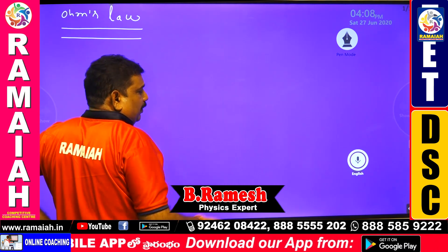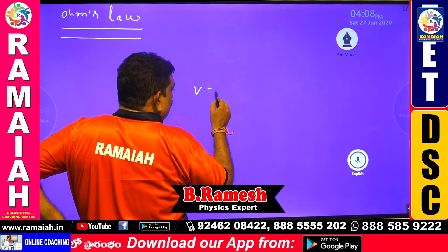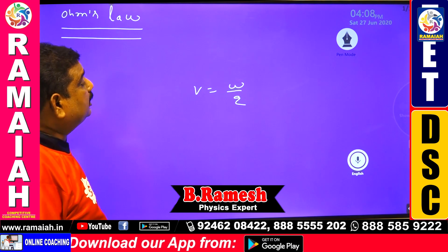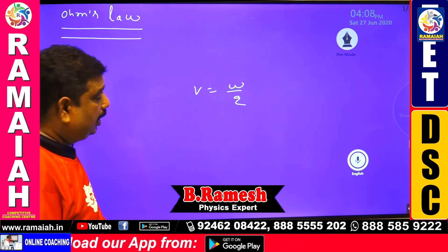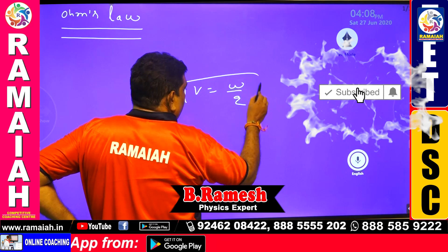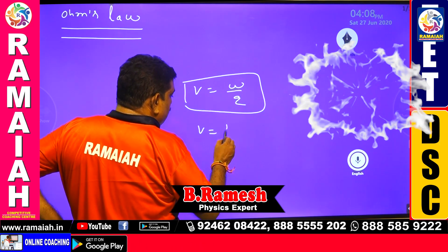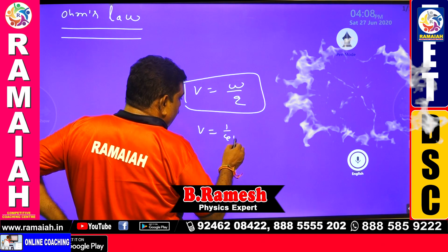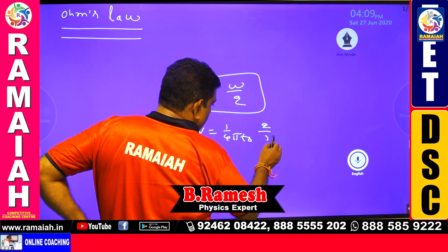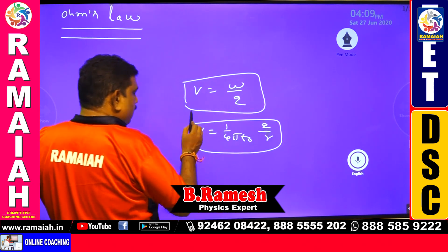What is a potential difference? V is equal to W by Q — that is the potential difference or potential. Electric potential V equals 1 over 4πε₀ multiplied by Q over R. This is the formula for electric potential.